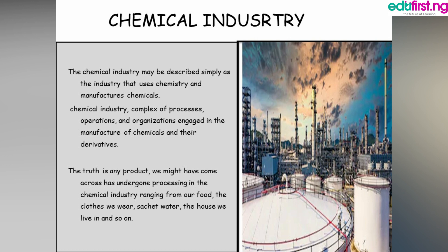Any product you might have come across has actually undergone processing in the chemical industry, starting from the raw material. For example, the rice we eat — when harvested it comes as brown rice, and then it goes through a refining process to become white rice. Most foods we eat, the beverages, even cocoa, have to go through several processes before becoming cocoa powder used to make beverages like tea and Milo.